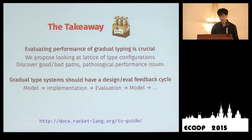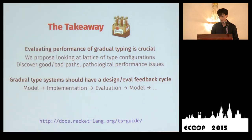To conclude with two takeaways: first, evaluating performance of gradual type systems is crucial because there might be performance pathologies — we propose looking at the lattice of all type configurations for gradually typed benchmarks, and this is still a work in progress. Second, gradual type systems should be designed in this design and evaluation feedback cycle. Thank you.